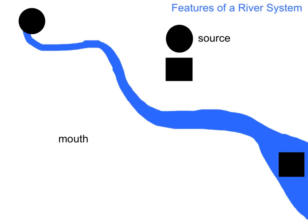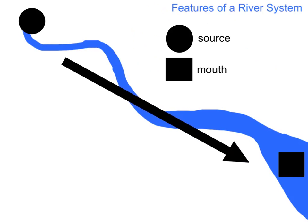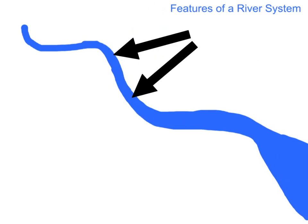The river will flow from the source to the mouth, and the mouth is often at a sea or a lake. Rivers do not flow in straight lines. As they move along their course, they meander through the landscape. Meanders are caused by different strengths of rock along the river's course. You can see some meanders here — they are the bends in the river channel.